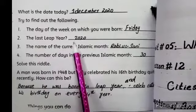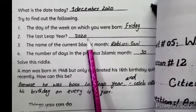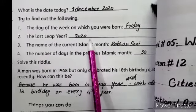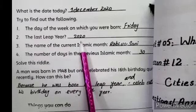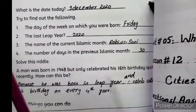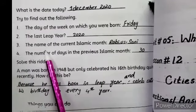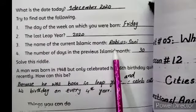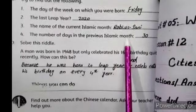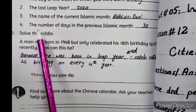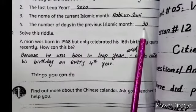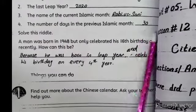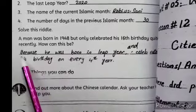The last leap year - which year was the most recent leap year? That was 2020. The name of the current Islamic month - the Islamic month going on is Rabi-us-Sani. The number of days in the previous Islamic month - there were 30 days in it.